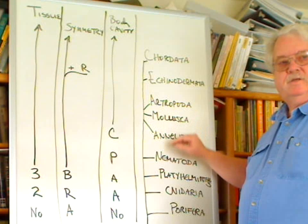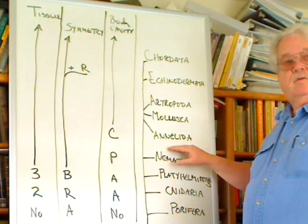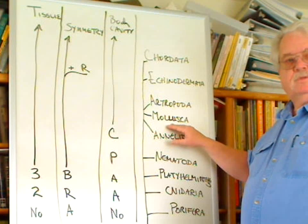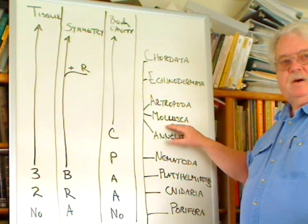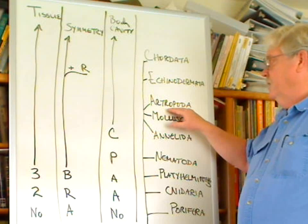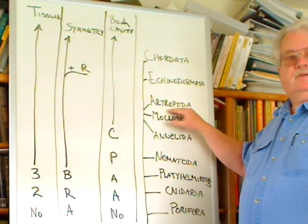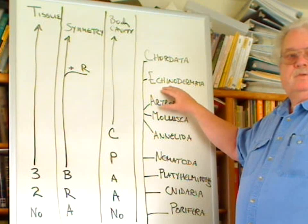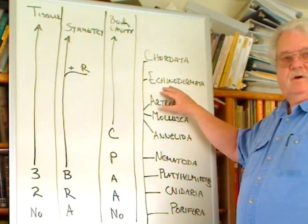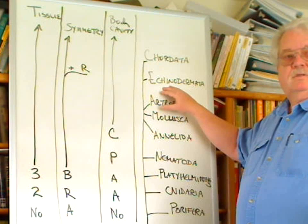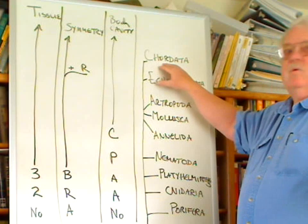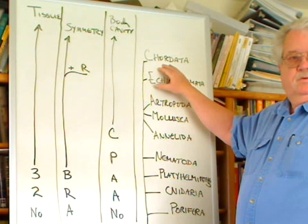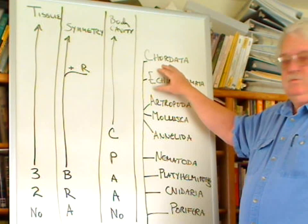Annelids are earthworms and leeches. Mollusca include clams, snails, and octopi. Arthropods include the insects and crayfish and such. The echinoderms include things like starfish and sea urchins. And the chordates, which are fish up through humans — the organisms with backbones.